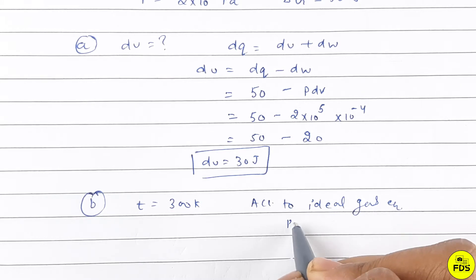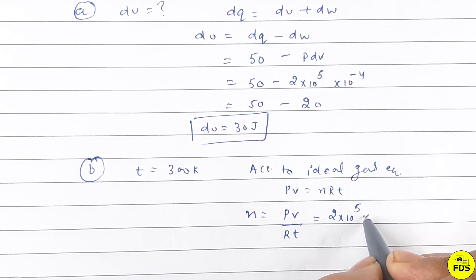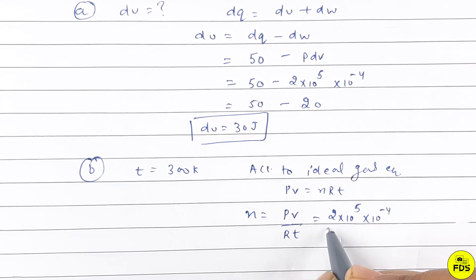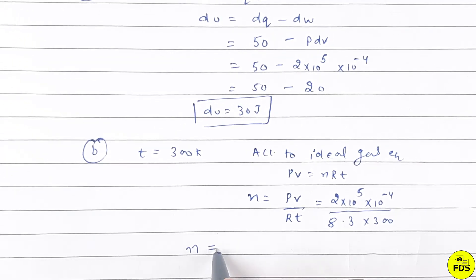So PV equals nRT, so n equals PV over RT. P is 2 into 10 raised to power 5, V is 10 raised to power minus 4, R is 8.3, and temperature is 300.